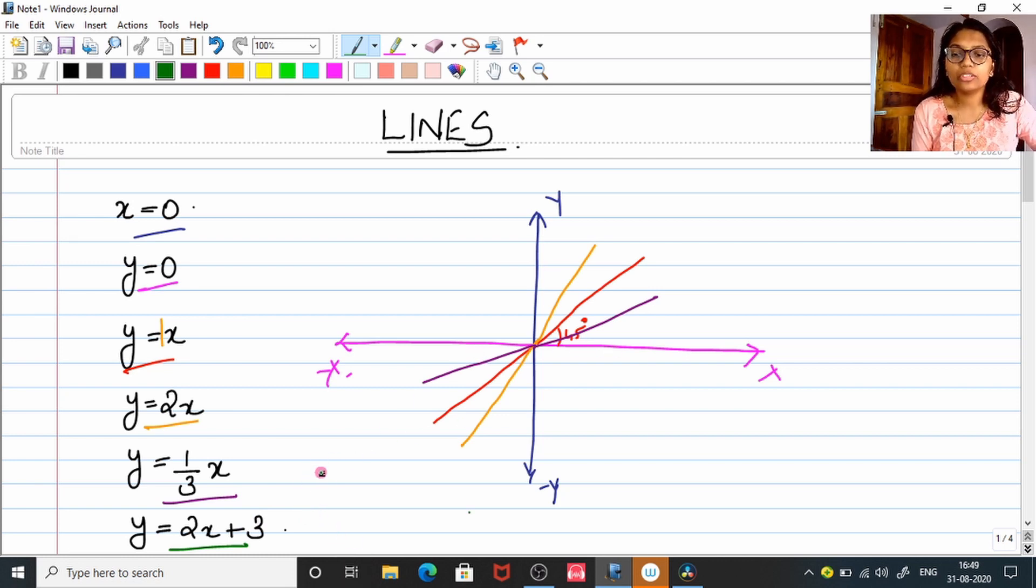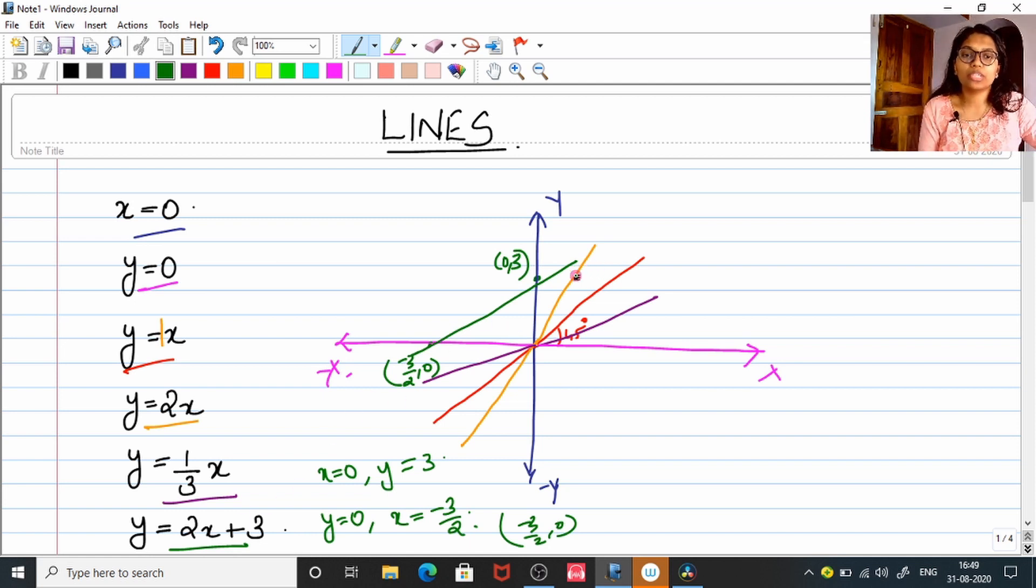So here, how we draw the line is when x = 0, y will be 3, and when y = 0, x will be -3/2. Just point out (0, 3) and (-3/2, 0). The point will be on the negative x-axis. So just join the line and get your y = 2x + 3 line.